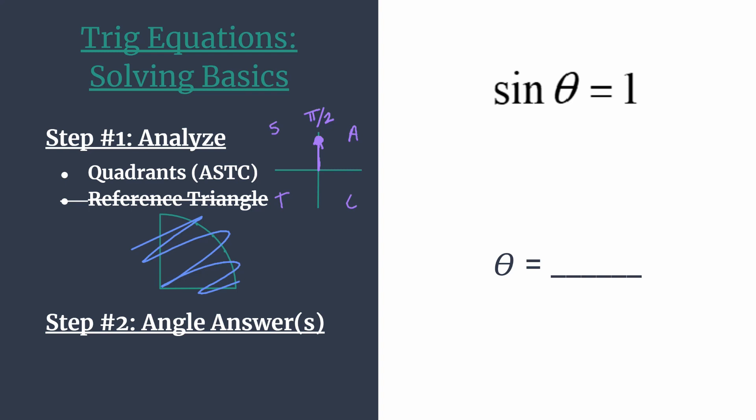So we can say that theta equals pi over two. Plug that back in to double check if you just want to be certain. We know that the sine of pi over two is equal to positive one. So that's our only solution on the unit circle or on that interval from zero to two pi.